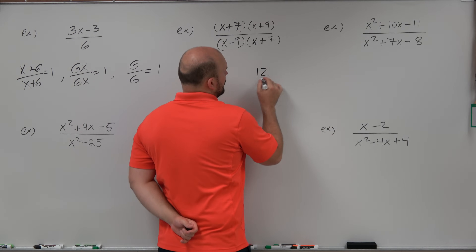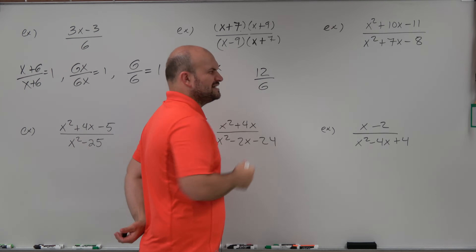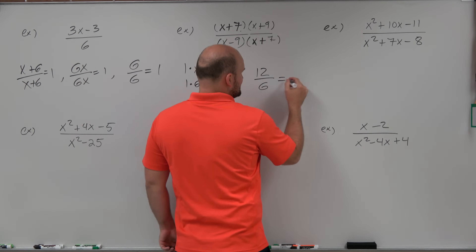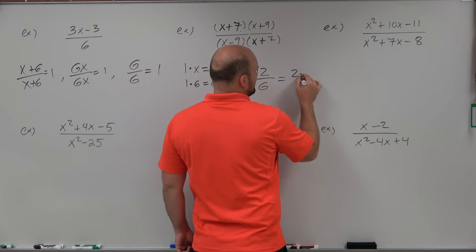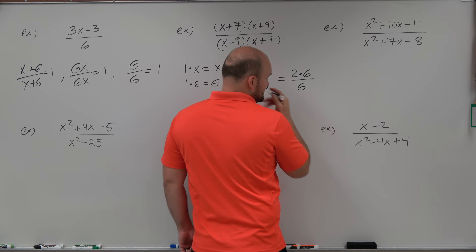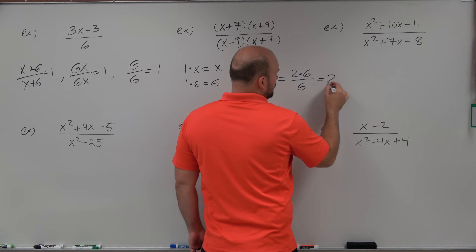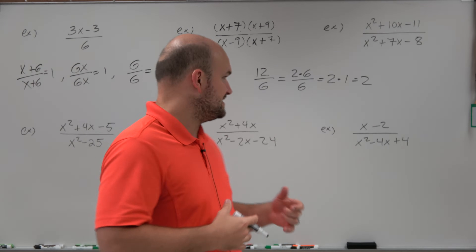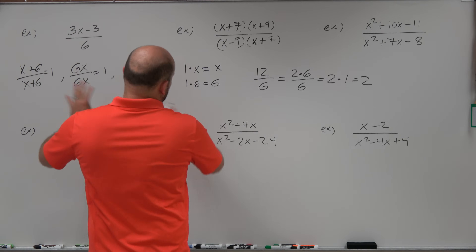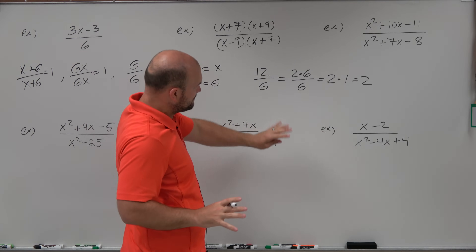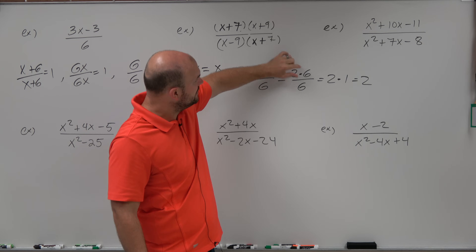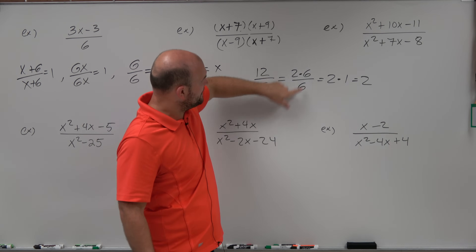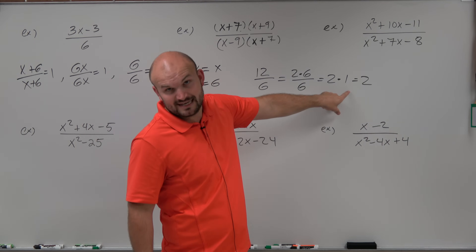For instance, if I had 12 divided by 6, we'd say 6 goes into 12 two times. But in reality, we could rewrite this as 2 times 6 divided by 6. Since 6 divided by 6 equals 1, then 2 times 1 equals 2. So when working through these problems, we want to break apart each expression so that the terms are a product — separated by multiplication — and then apply the division property so they equal 1.